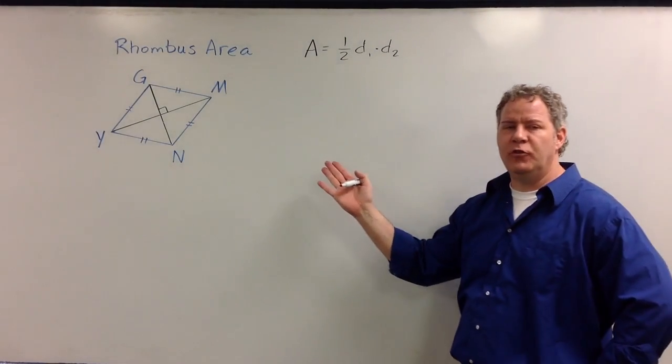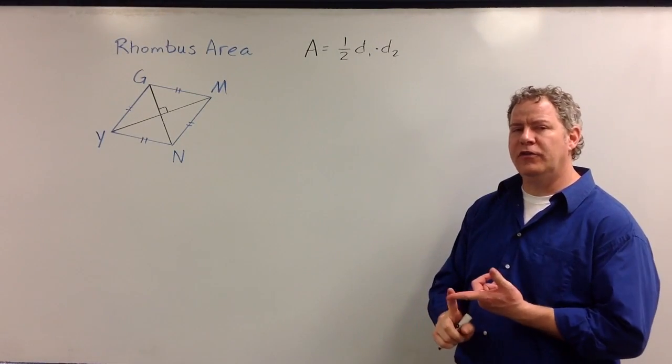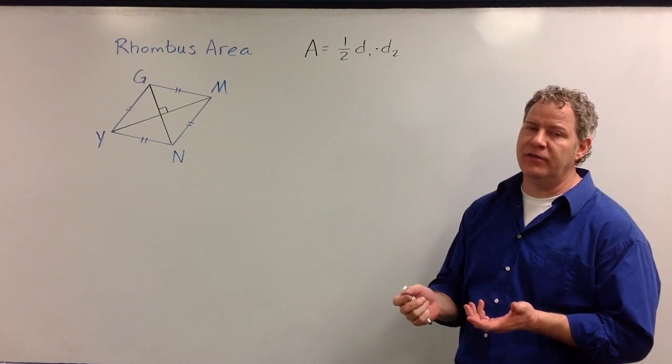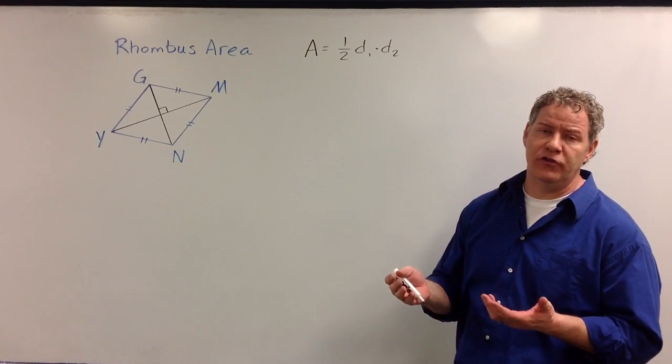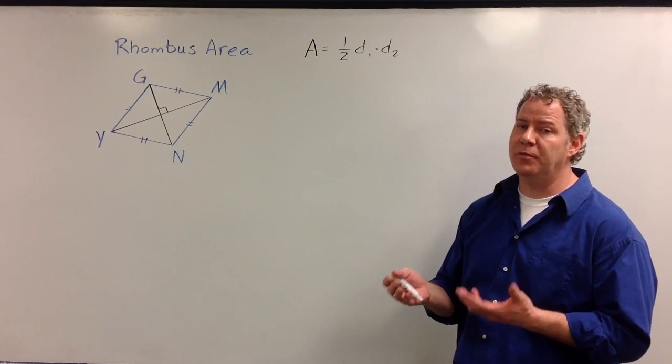A rhombus is a special parallelogram. One of the characteristics of a parallelogram is that the diagonals bisect each other. A special characteristic of a rhombus is that the diagonals are perpendicular as well.